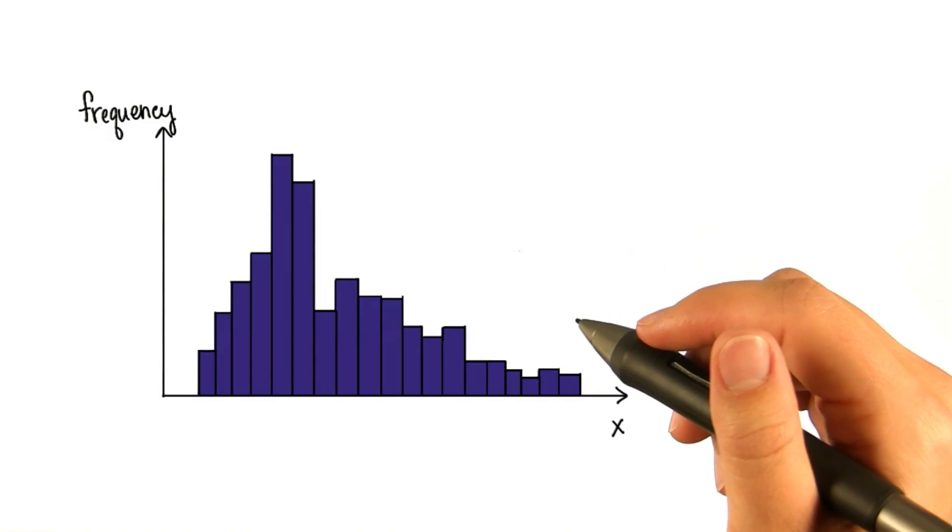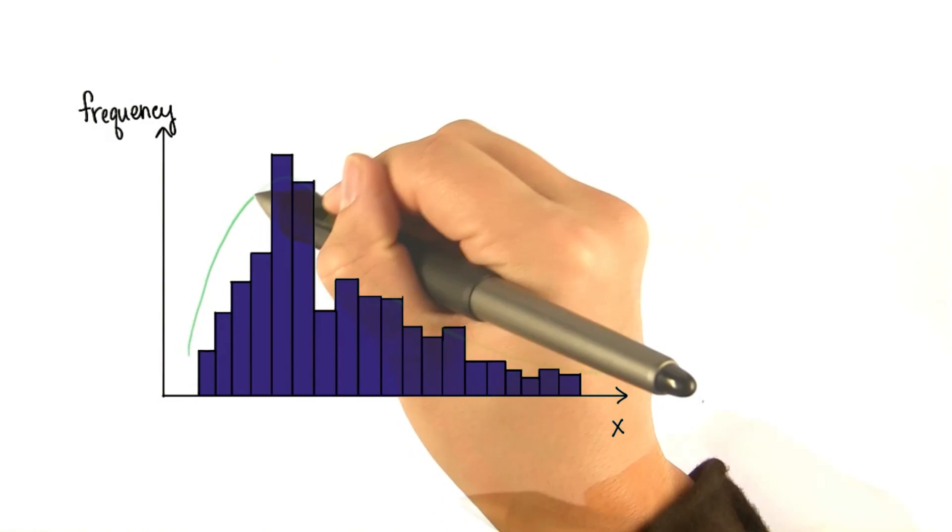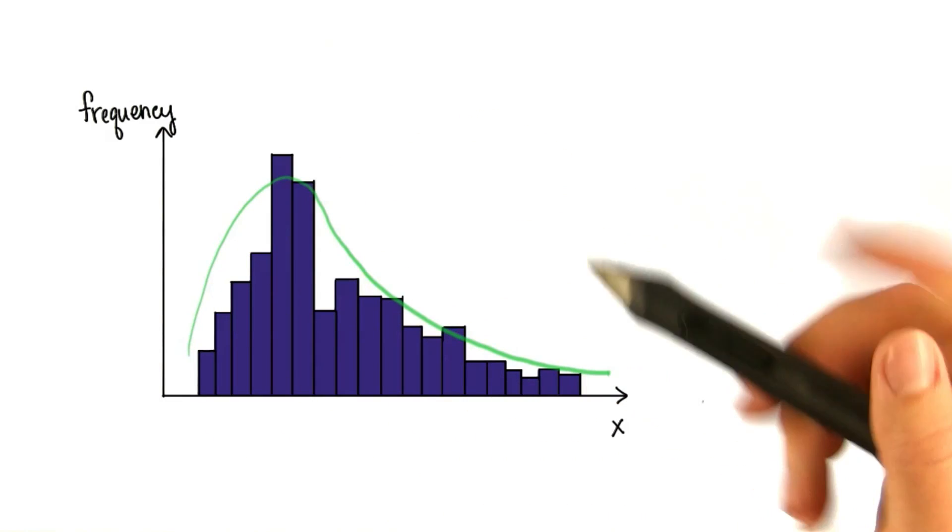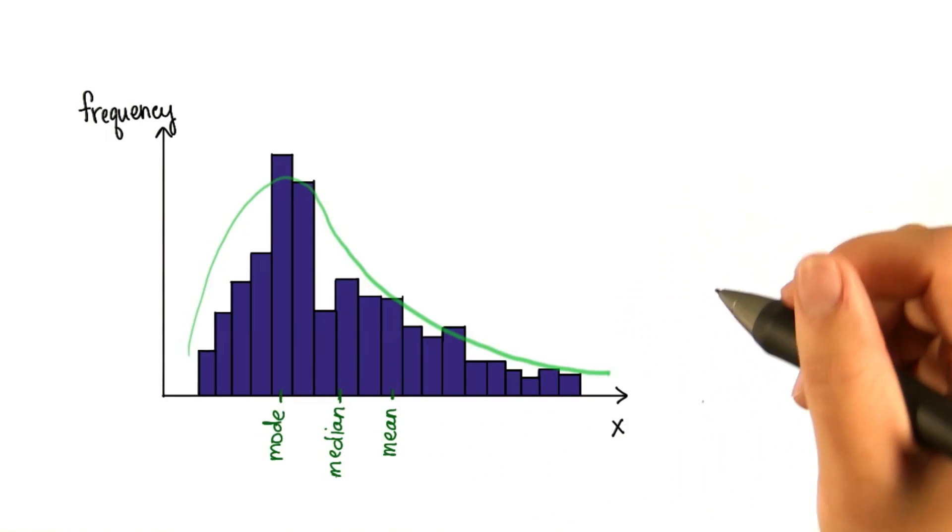You've seen how important it is to visualize data sets with histograms in order to analyze the shape. We want to analyze the shape so that we can think critically about the mean, median, and mode to describe the data set.